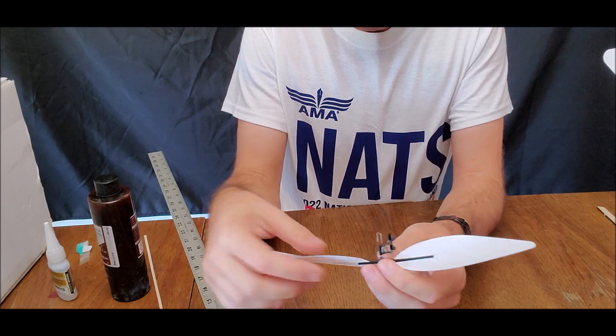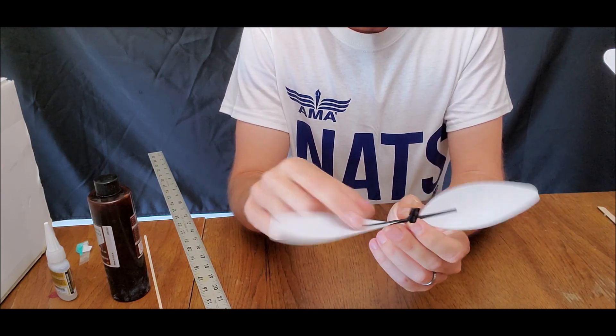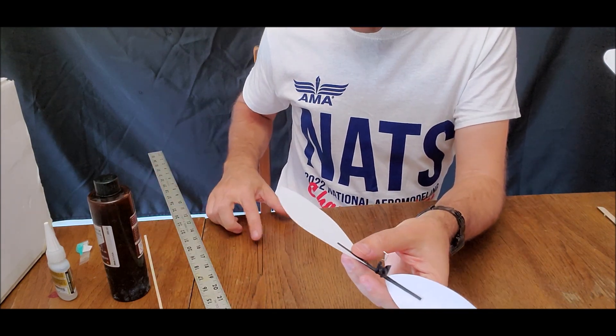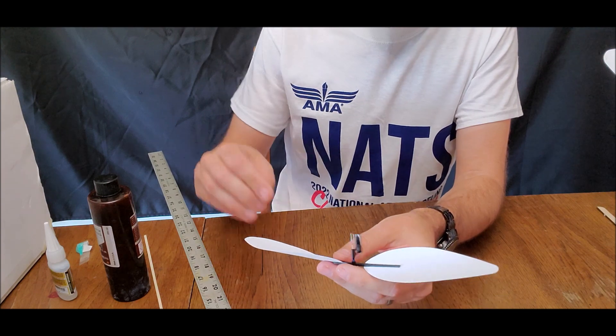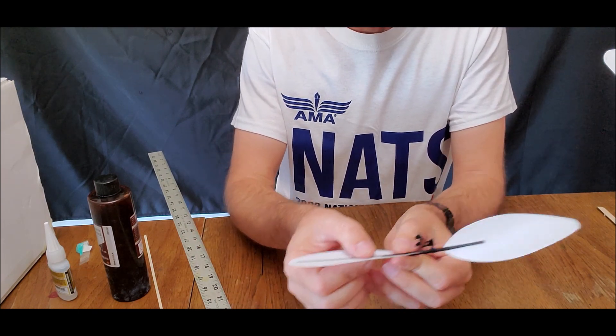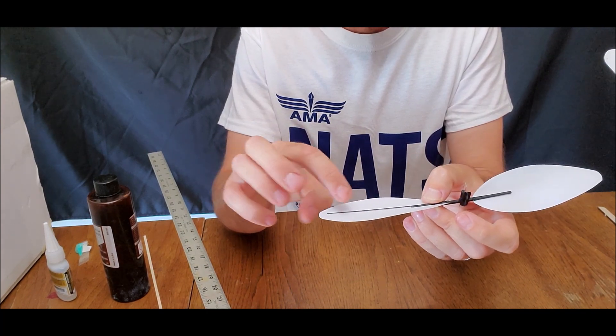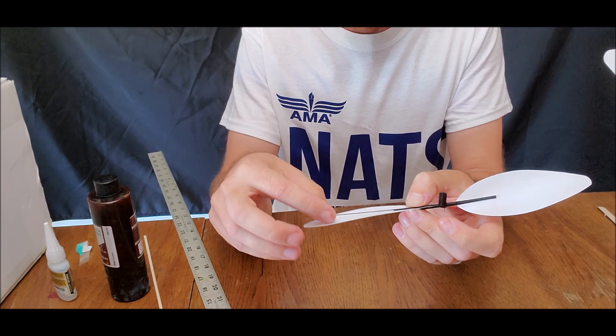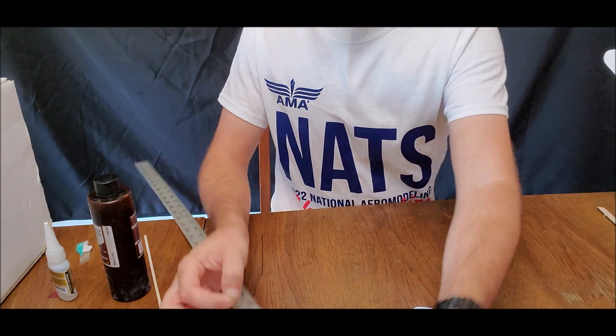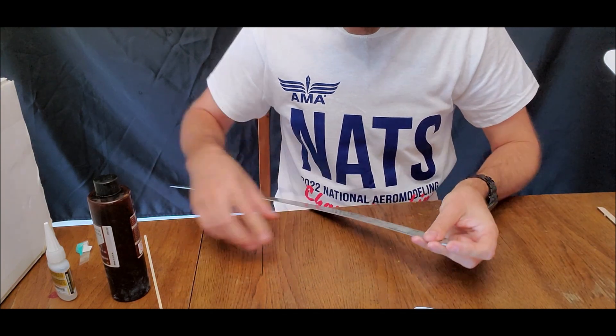So on these propellers the main issue is that the spar only extends out a little ways on here. So what we can do is we can effectively increase the length of the spar, so we can take a piece of carbon and we can lay it in here and glue it in place such that it extends the spar out. Now you don't really need to go quite this far out, so we're going to cut off a shorter piece about, I recommend about three and a quarter inches long.